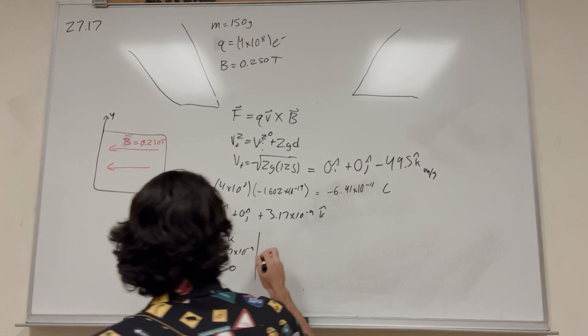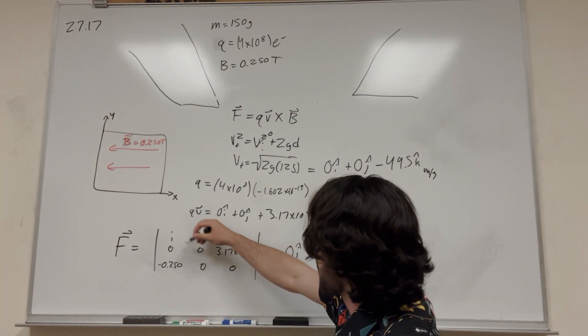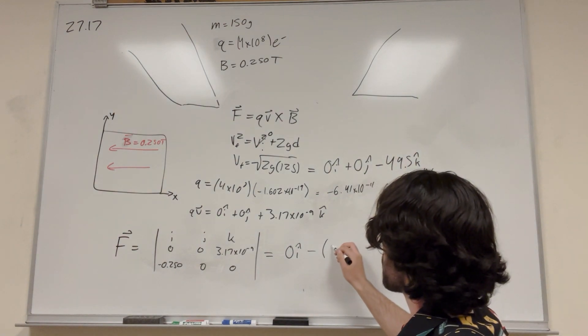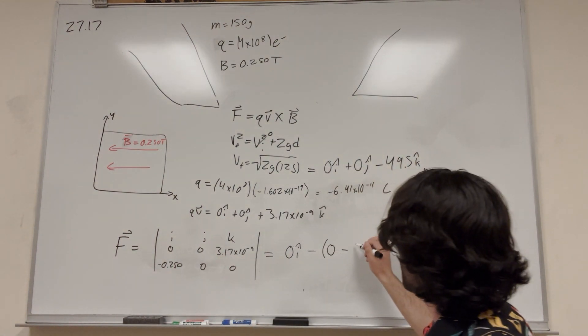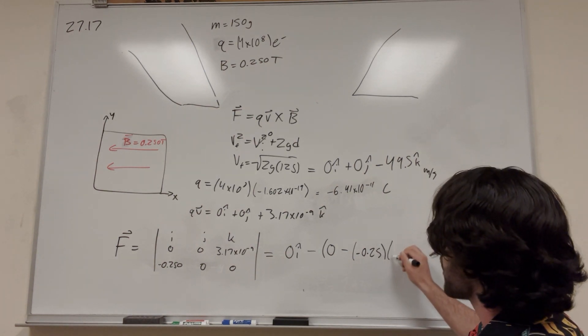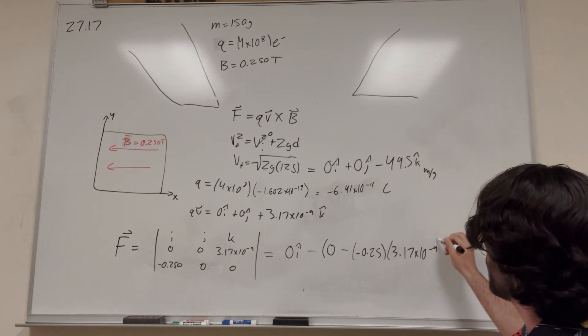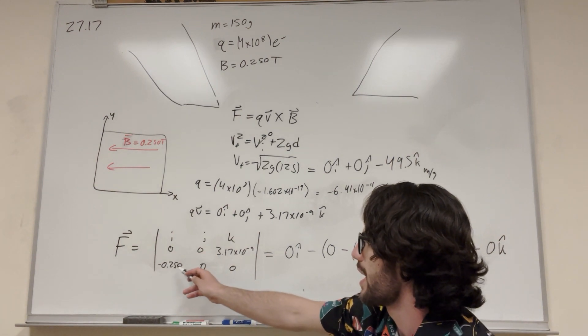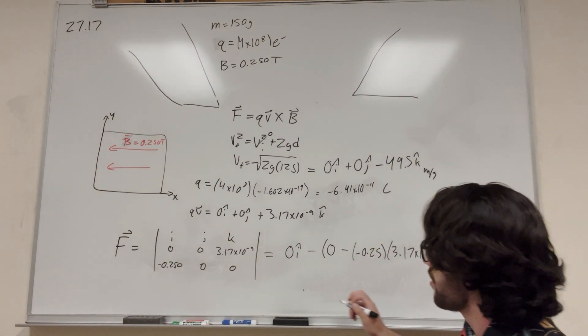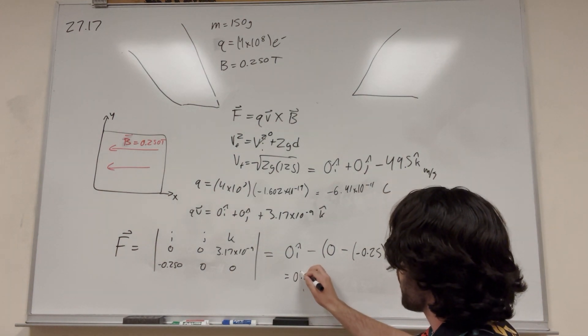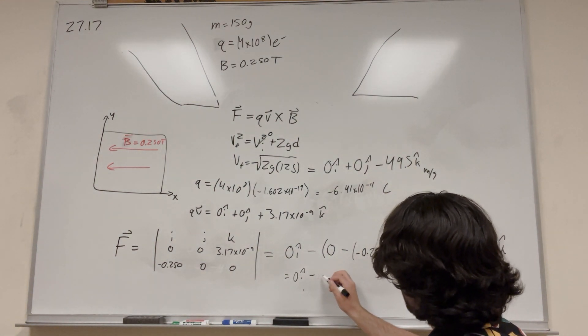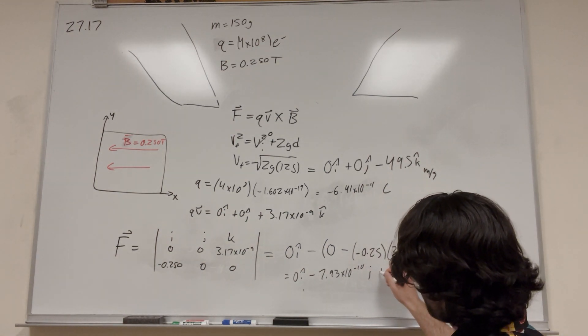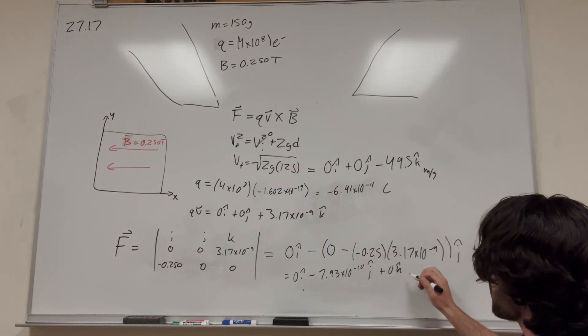So then we just have to compute this cross product. Of course this is going to give you 0i, just because this times this is 0. So then we're subtracting j. So from here it's going to be 0 times 0, so 0 minus this times this. So minus negative 0.25 times 3.17 times 10 to the negative 9k. So then if you do this, it's going to give you 0i, it's going to be minus 7.93 times 10 to the negative 10j plus 0k. And of course this is force, so this is in newtons.